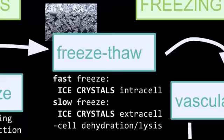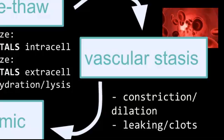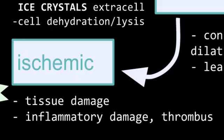In the vascular stasis stage, your body can't decide whether to save the core temperature or save your fingers. There's a lot of constriction and dilation every five to ten minutes, and this causes a lot of leaking and clots in the vessels. This leads to our last stage, the ischemic stage, where we see a lot of inflammatory damage and eventually thrombus.